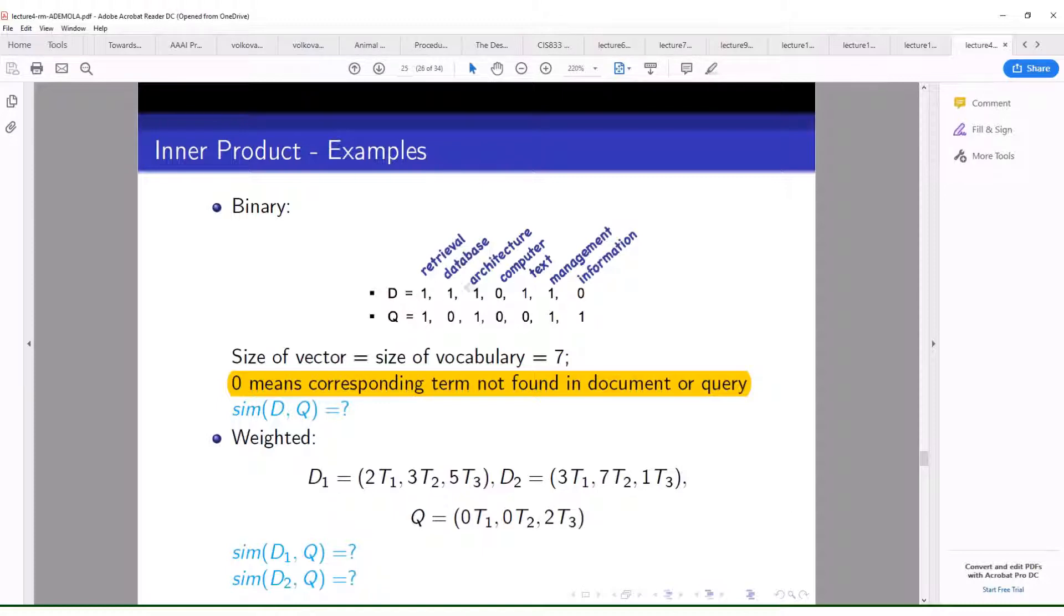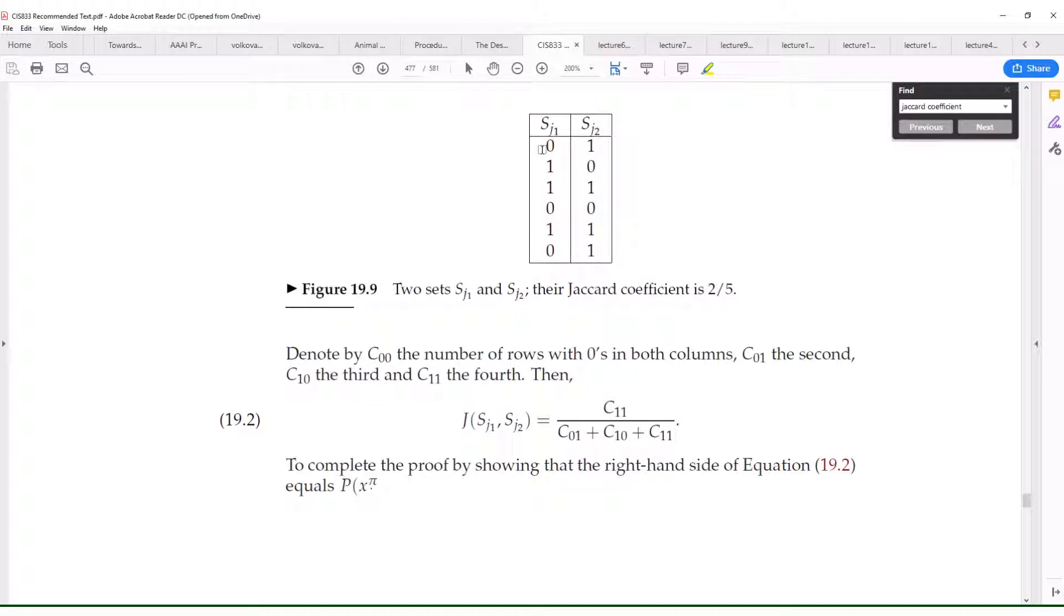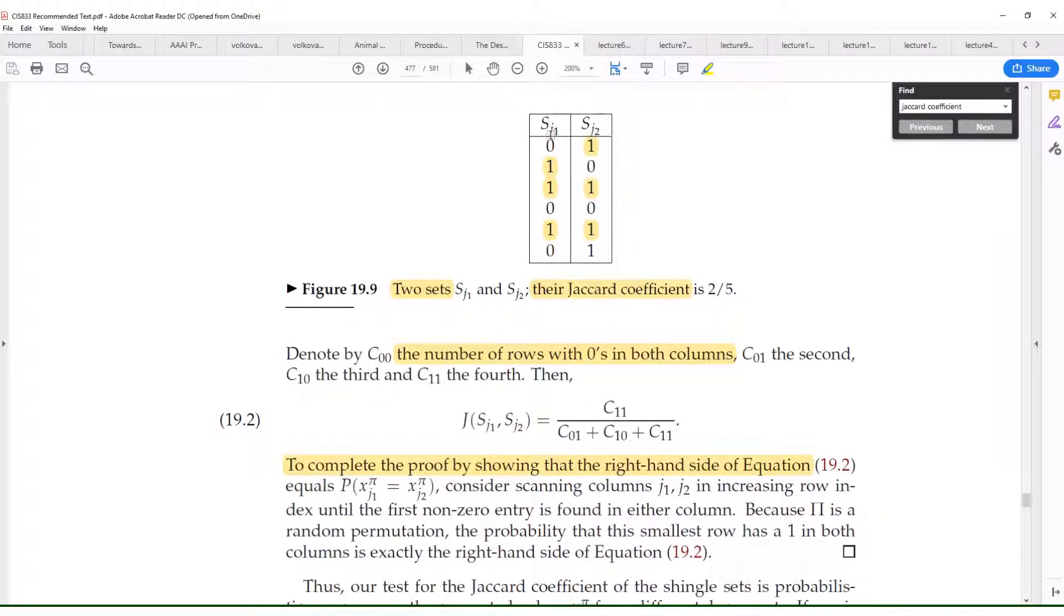So I get back here now. Here we have these two documents, SJ1 and SJ2. Like we see in the previous one, each of these represents the terms that are in the document. So I want to measure the Jaccard coefficient between these two documents.